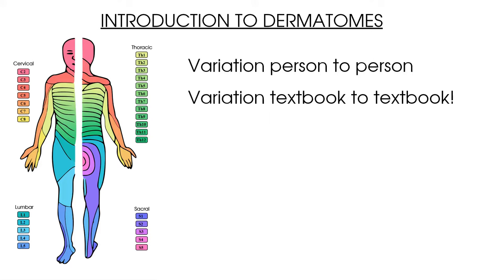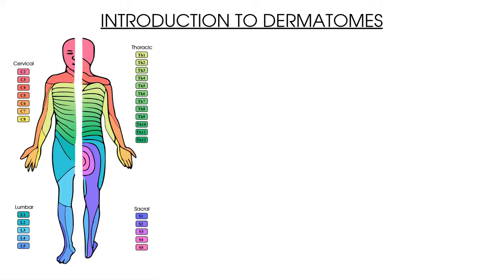It is also important to note that dermatomal areas overlap, and so in this video we're going to be looking at the most consistent tactile areas for each individual dermatome — the area we can link to an isolated dermatome. Here is our diagram indicating the dermatomal areas of C2 to T1, which are the dermatomes we'll be covering. We will not be testing sensation at every part of the dermatome, partly because dermatomal areas overlap, so instead we're focusing on the area we can most clearly link to an individual dermatome.